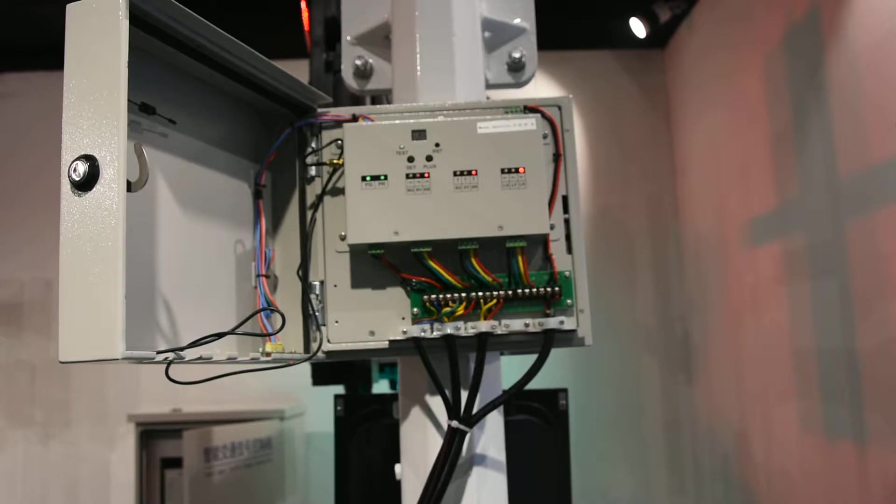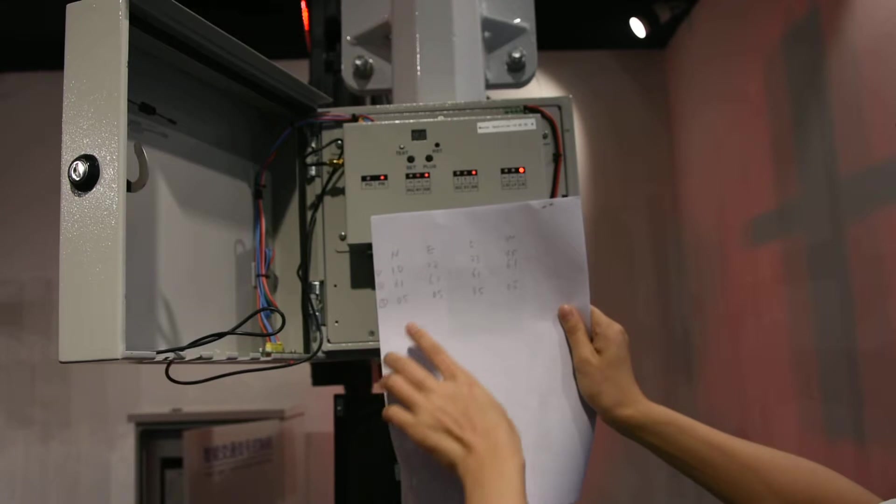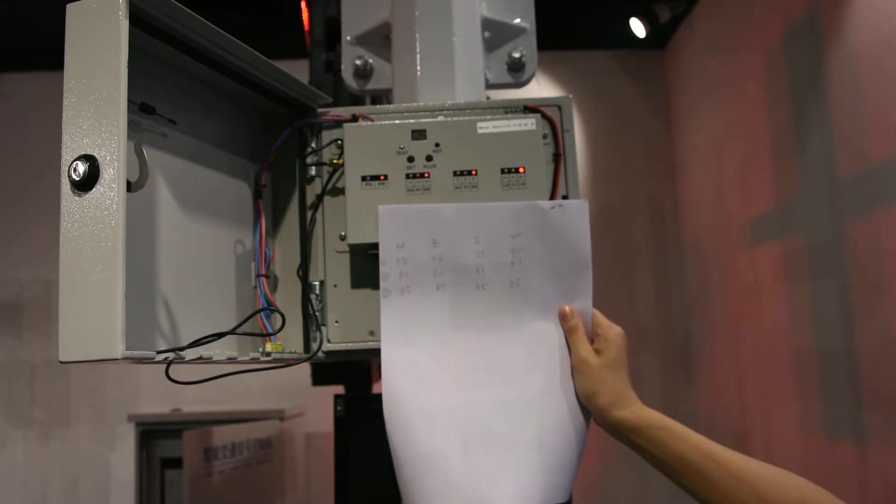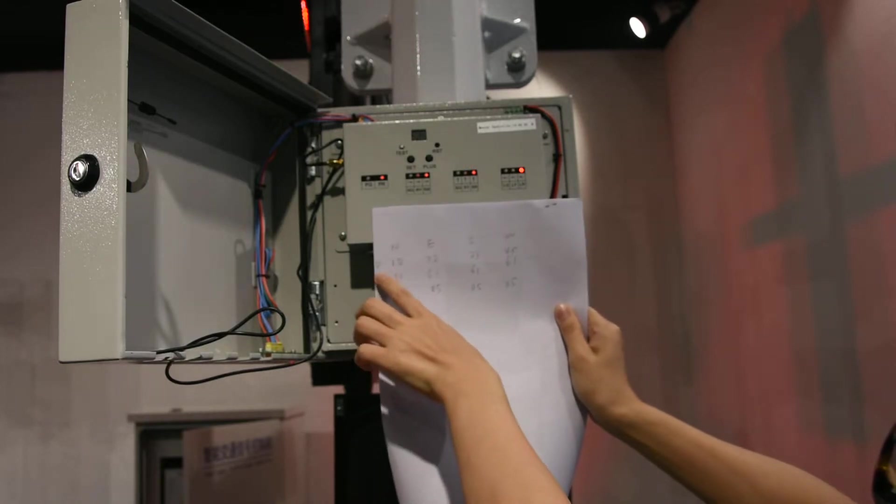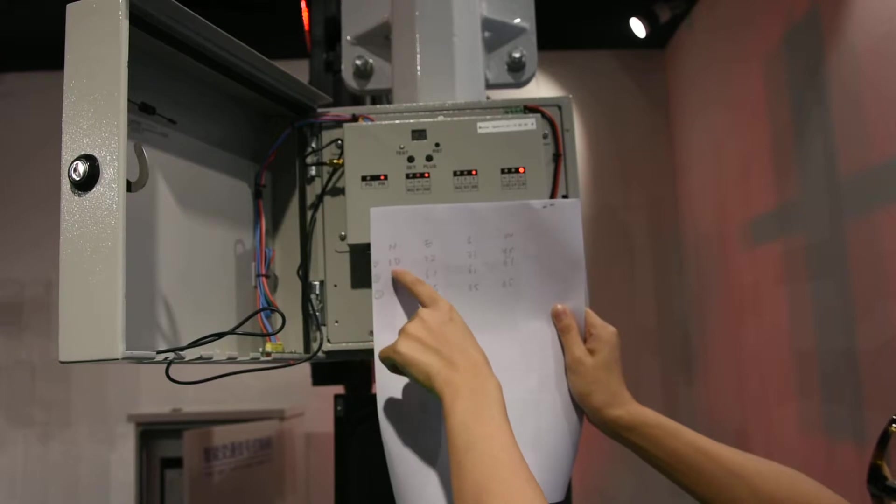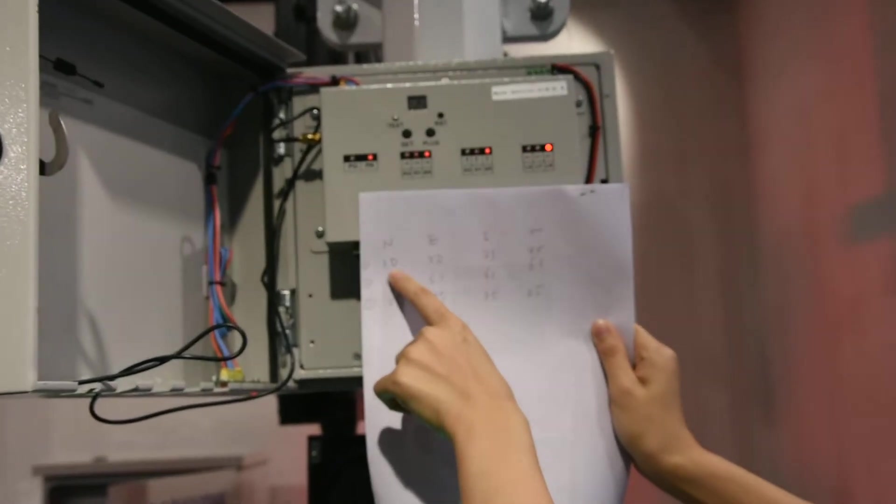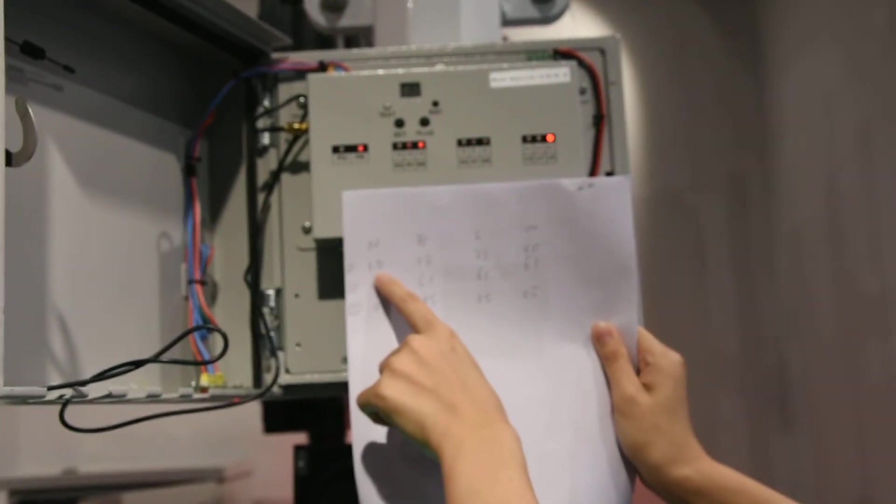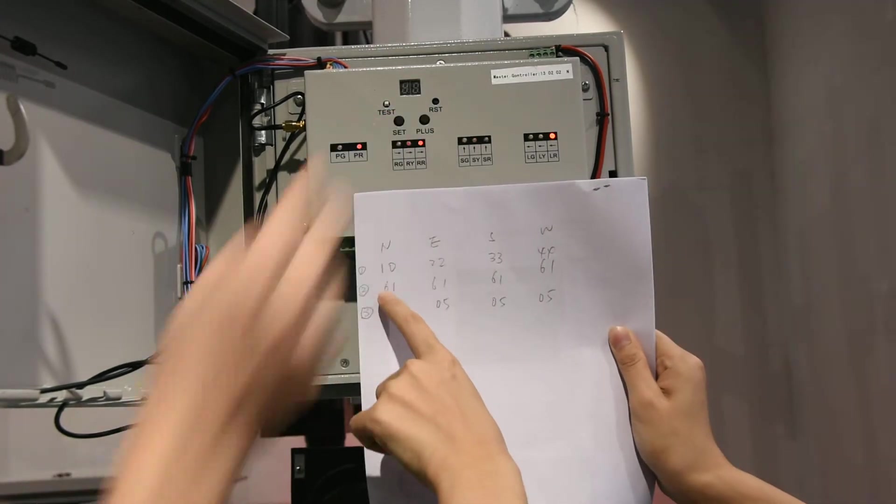The most important thing is to set up the base wireless controller. You can see from here. For each controller, we have to set up three steps. First step is for the direction. This number is for the number of the slave controller.